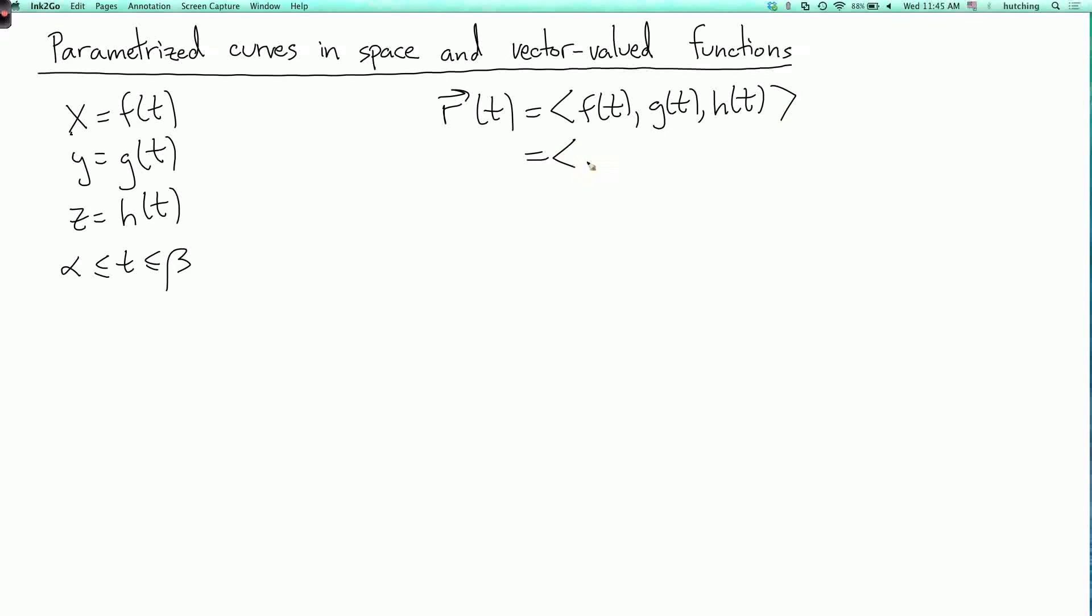Or we might more simply write this as x of t, y of t, z of t. So r of t is our position at time t, and its components are x of t, y of t, and z of t.